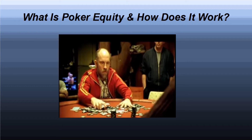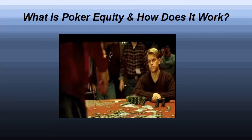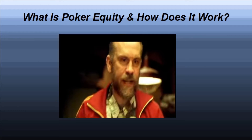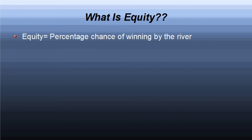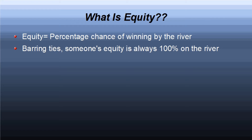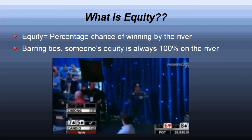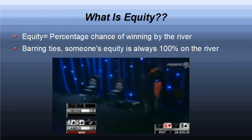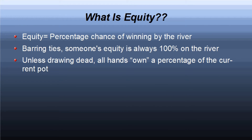For those of you who have not had the pleasure of trying to figure out this equity business, let's define what it is. Equity is any player's chance of winning a given poker hand by the river. Once you get to the river, equity no longer matters since there are no more cards to come and the winner is already established. Put another way, equity is how much of a pot is owned by each player on the current street — basically your chance to win, or the money owed to you if you got all in right now.